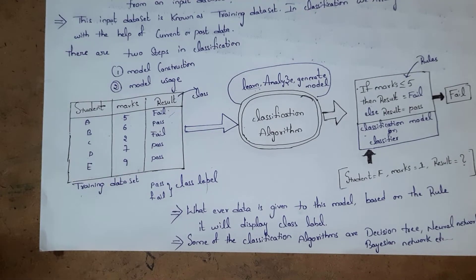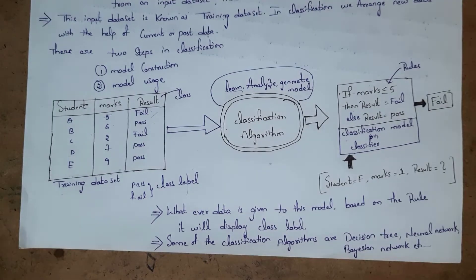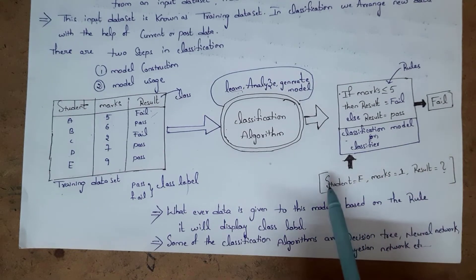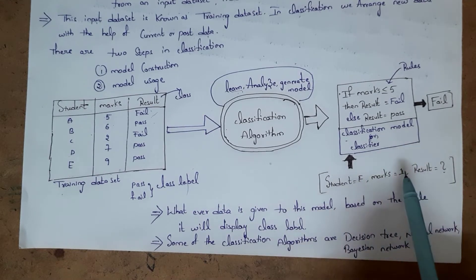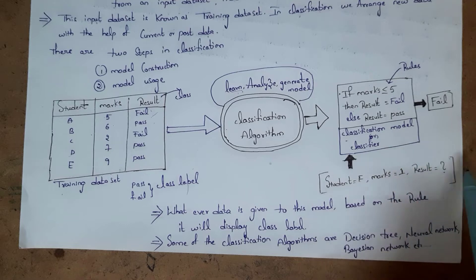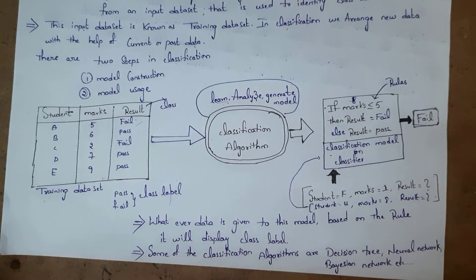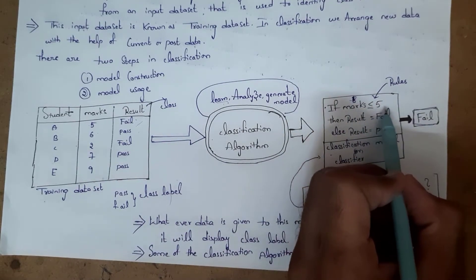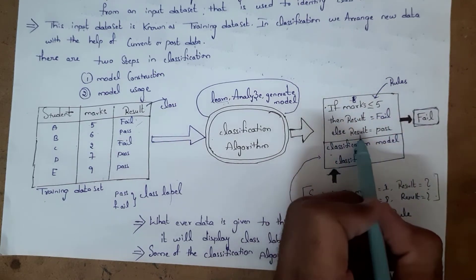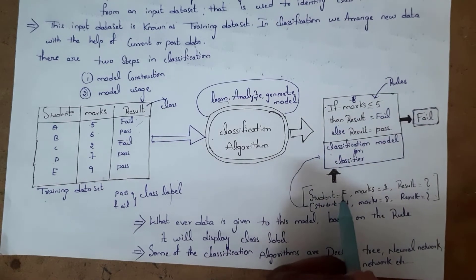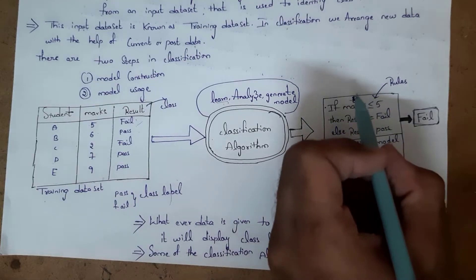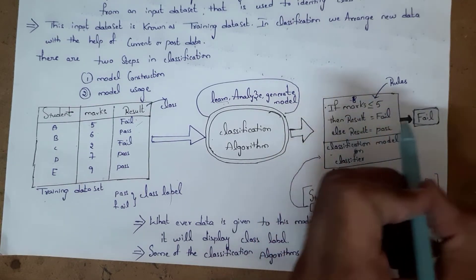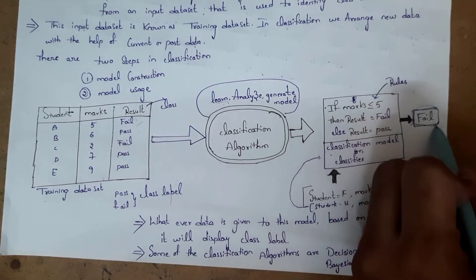After model construction, the next step is model usage. For example, I want to know the result of student F who got 1 mark. When I send this information into the classification model, the model will check the rule: if marks are less than or equal to 5, then result equals fail; else result equals pass. Student F got 1 mark, and 1 is less than 5, so the result is fail — it will display the result as fail.